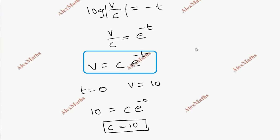The solution is v equals 10 e to the power minus t. But at t equals 2 seconds,